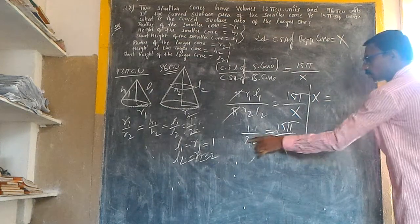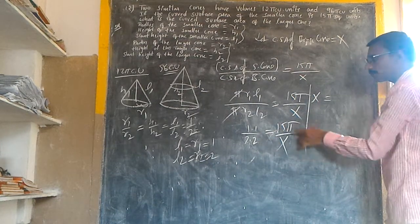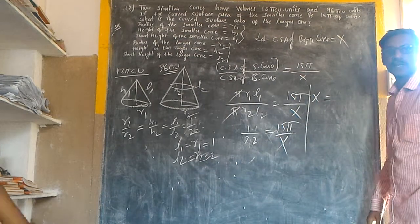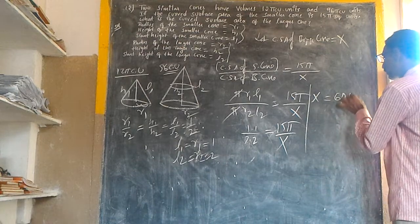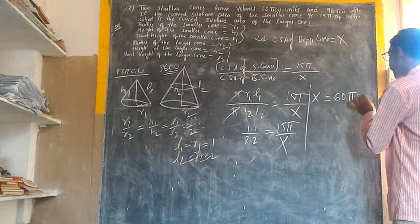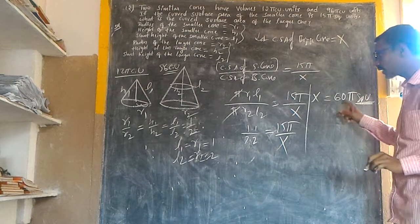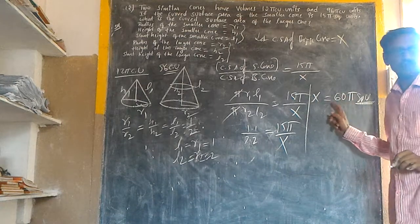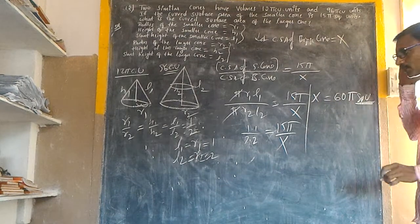Therefore x equals 4 × 15π equals 60π square units. The curved surface area of the larger cone is 60π square units.